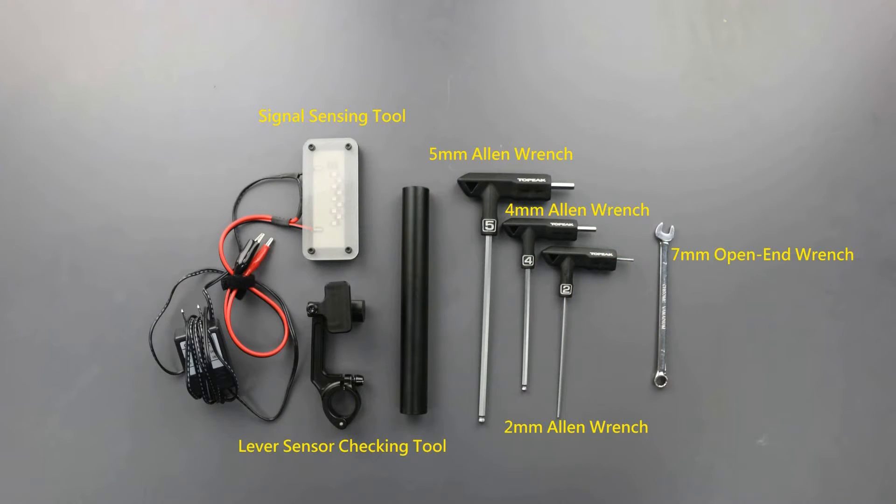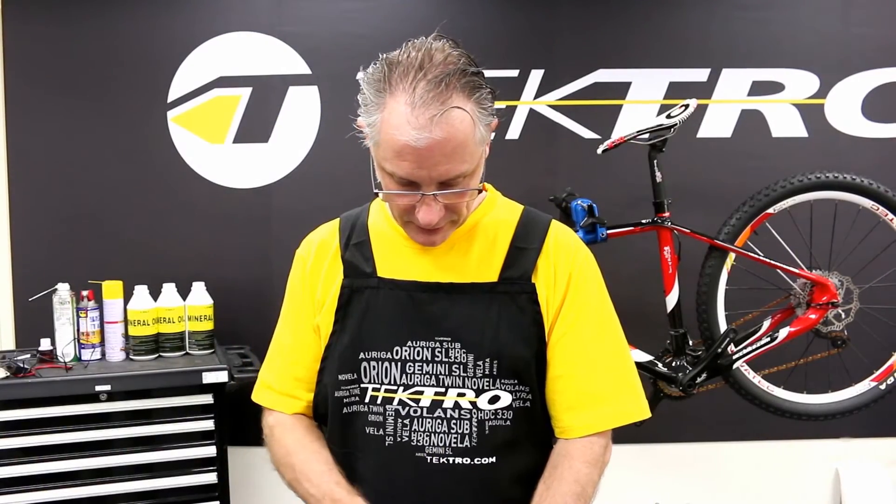Tools needed today will be the signal sensing tool, the lever sensor checking tool, a 5mm Allen, 4mm Allen, 2mm Allen, and a 7mm open end wrench. Let's start by removing the set screw.